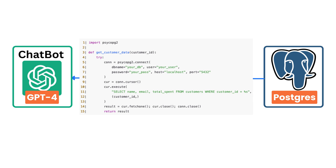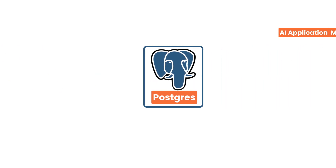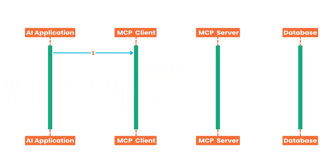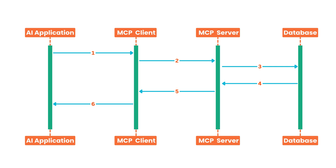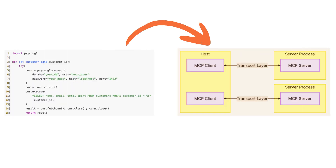But MCP says: let's not do that. Let's introduce a server, a network call, and a middle layer just to fetch this same data in a standardized way. Instead of that simple function call, the request goes from AI app to MCP client, then to MCP server, then to Postgres, back to MCP client, and then finally back to the AI app. What are we actually gaining here? Sure, standardization is nice, but is it worth turning a local function into a full-blown networked microservice just for the sake of standardization?